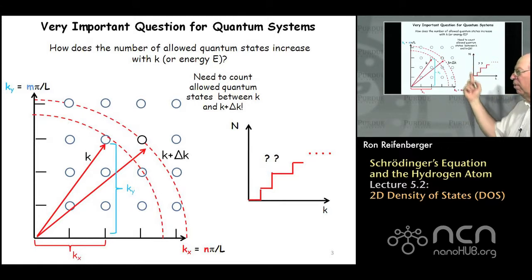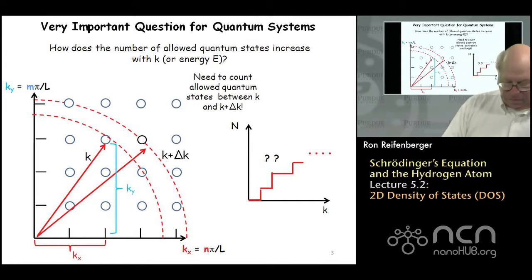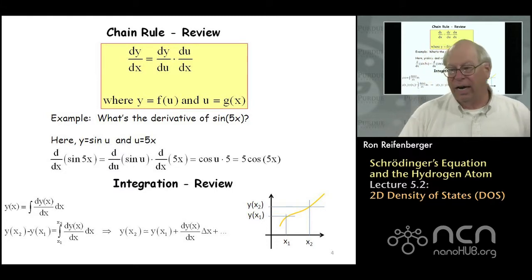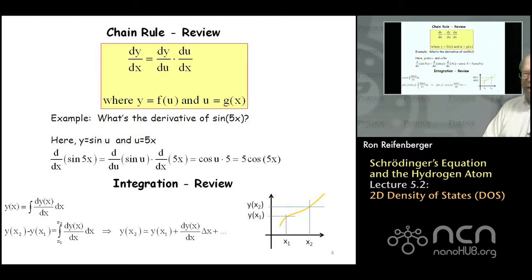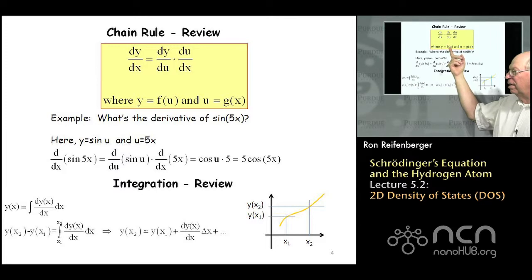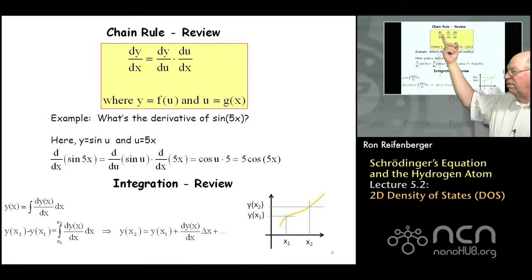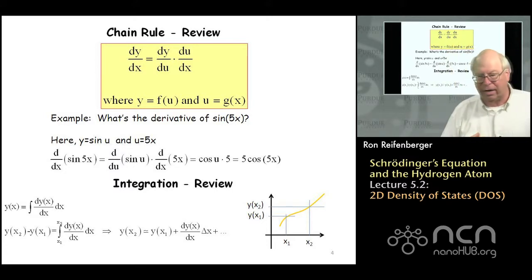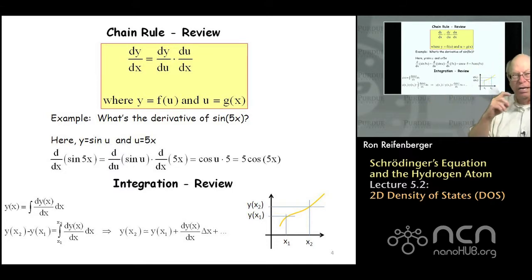Ultimately, what we want to do is plot the number of states versus k or the number of states versus energy, because it's this plot that turns out to be very useful. To do this calculation, I have to quickly remind you of the chain rule from calculus. The chain rule says that if you have a function y that's a function of a variable u, and u happens to be a function of another variable x, then the derivative of y with respect to x is dy/du times du/dx.